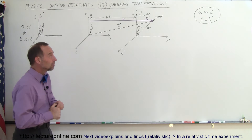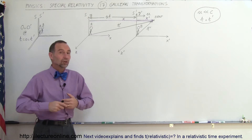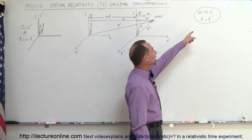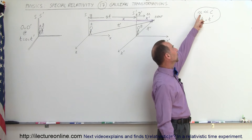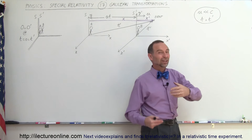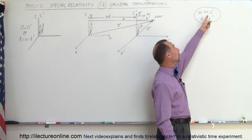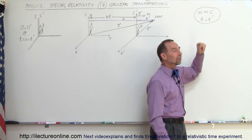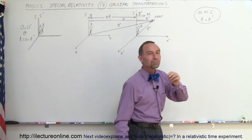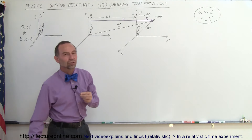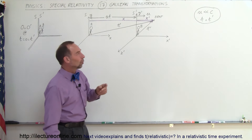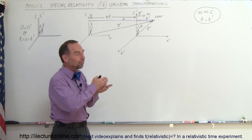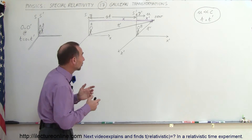We call them Galilean transformations because they use classical mechanics, which means the speed of the reference frame that's moving — let's say moving at speed U — is much, much smaller than the speed of light, such that we can say the time in both reference frames are essentially equal to each other. Prime is considered the moving reference frame; without the prime is the stationary reference frame.